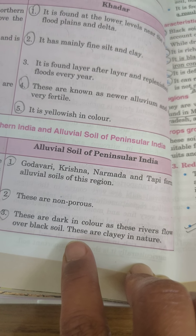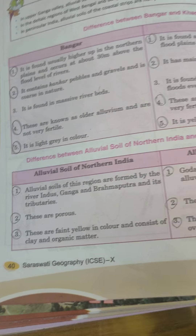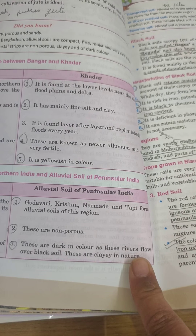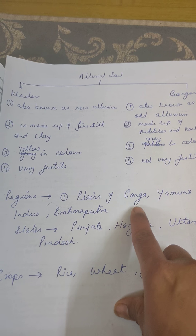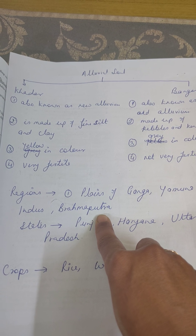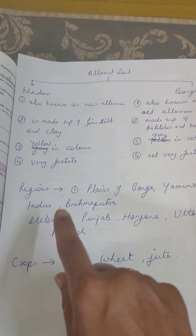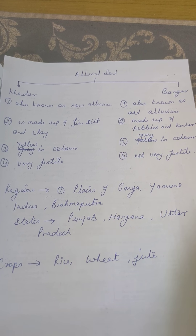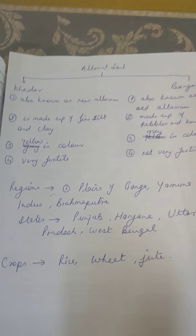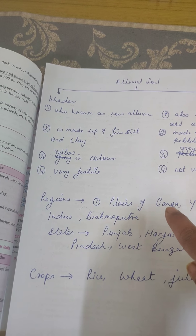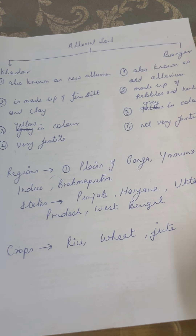Alluvial soil of North India is formed by the rivers Indus, Ganga, Brahmaputra and their tributaries. It is porous, faint yellow in color, and consists of clay and organic matter. The alluvial soil of peninsular India is formed by the Godavari, Krishna, Narmada, and Tapi rivers. It is non-porous and dark in color because rivers flowing over the peninsular plateau get mixed with black soil. They are also clay in nature.